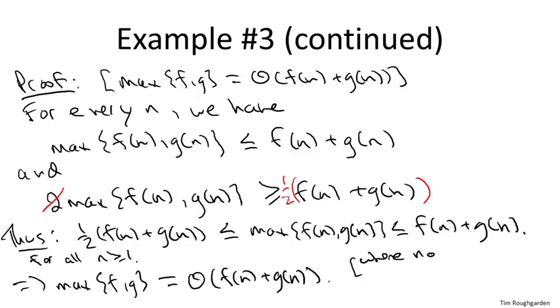And again, just to be explicit, the certifying choices of constants are n not equals one, the smaller constant is one half, and the bigger constant equals one. And that completes the proof.